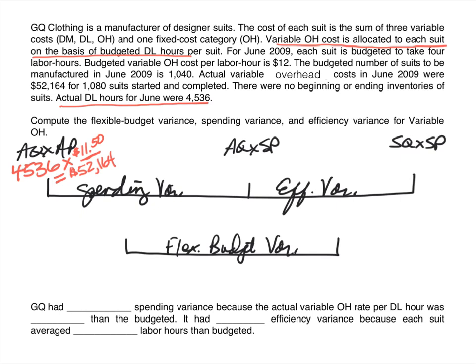Moving on to the second peg, we've already found actual quantity of 4,536 hours. Now we need the standard price — the price we should have paid, the budgeted price per labor hour. The problem tells us the budgeted variable overhead cost per labor hour is $12. So our middle peg is 4,536 × $12 = $54,432.